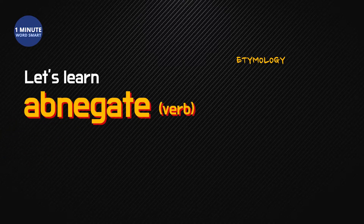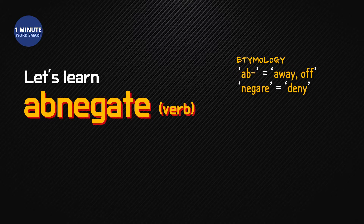First of all, the Latin 'ab' means away or of, and 'negere' means deny.